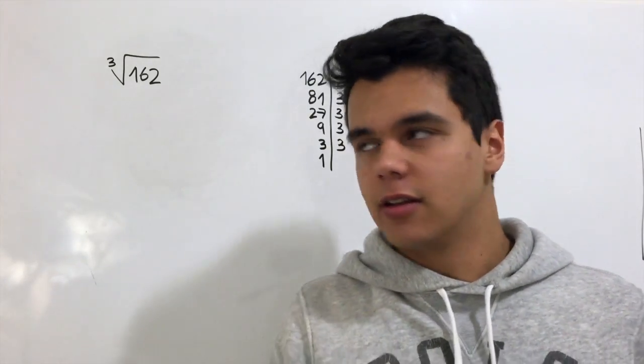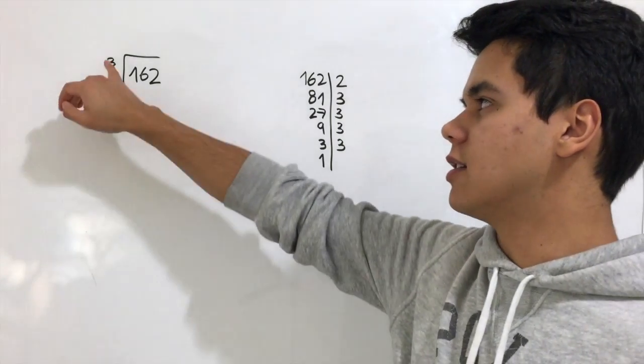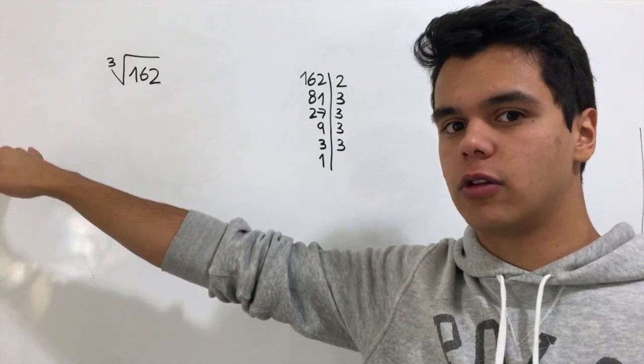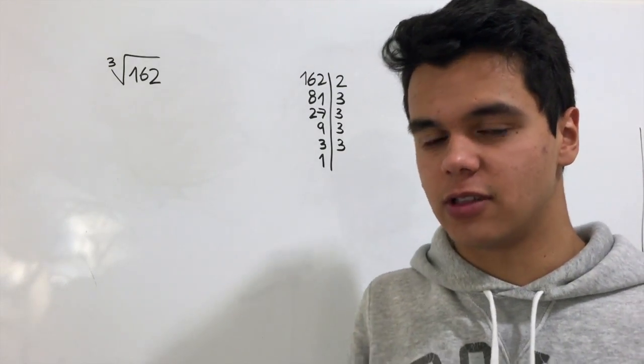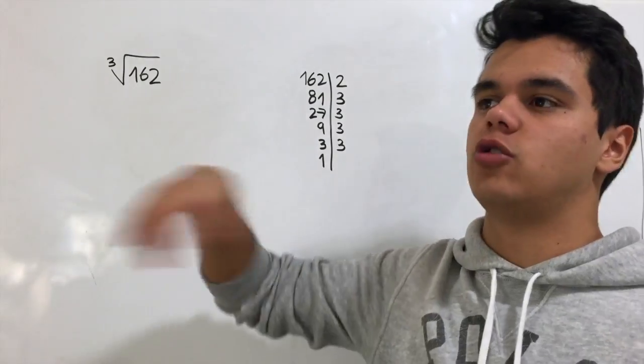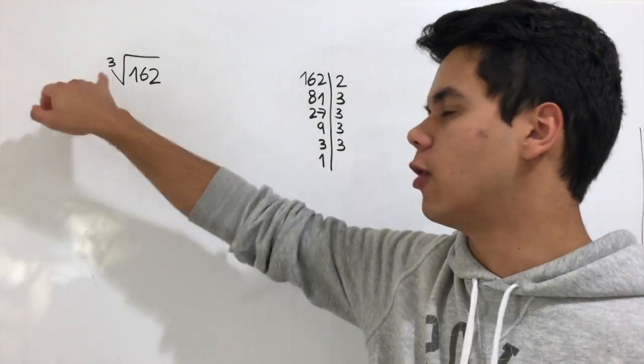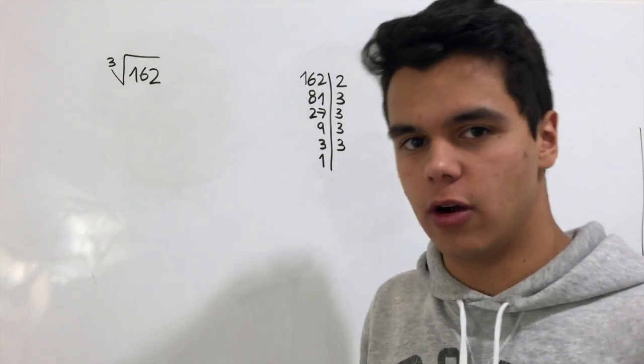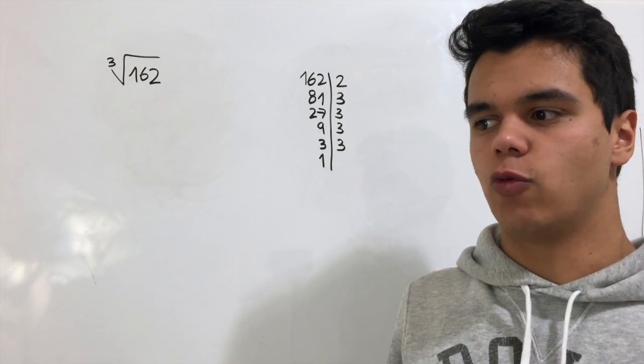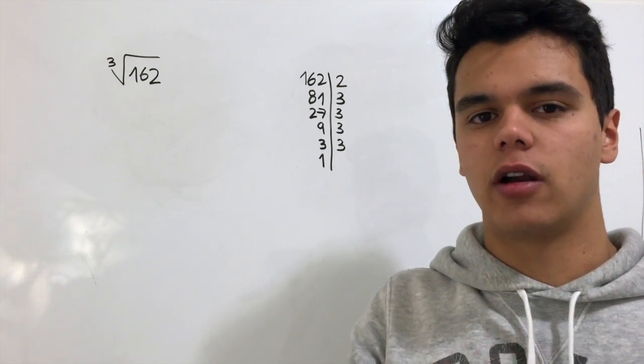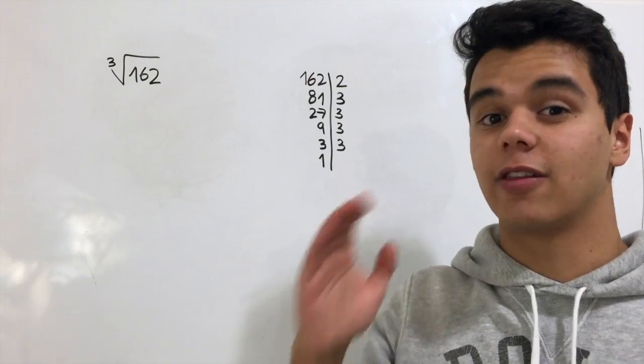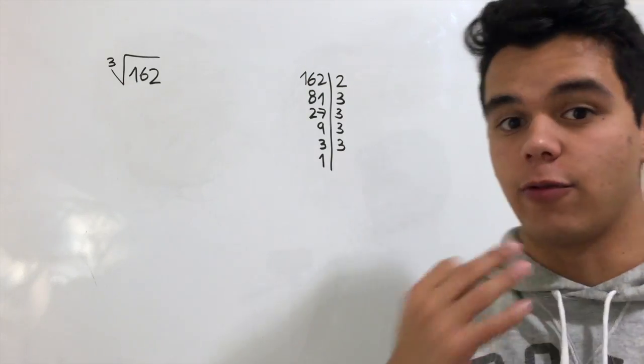Now we're not working with couples again because we're taking the cubic root. Instead of taking couples, we're going to take triples. If you have like a root 4 or root 5 and so on, you want to look for 4 and 5 numbers that are the same. In this example, we're looking for triples.